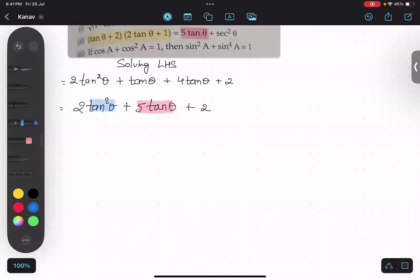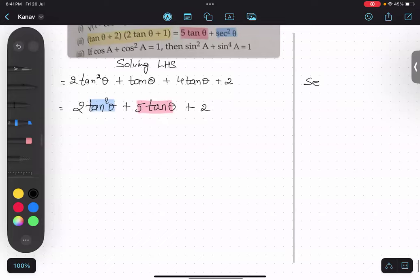How can I get rid of this tan² θ and get sec² θ? Is there any relationship between these things? Definitely we have. We have one identity: sec² θ minus tan² θ = 1.